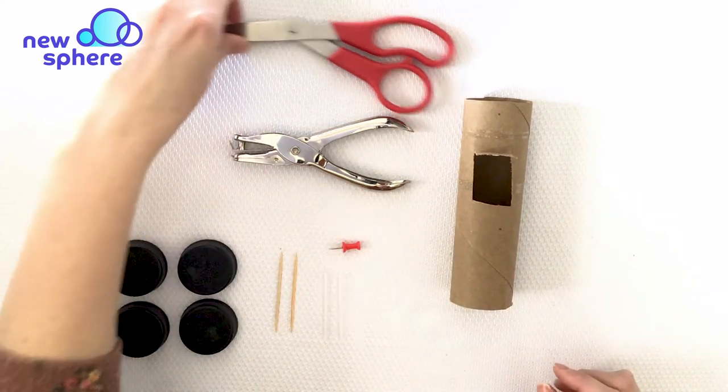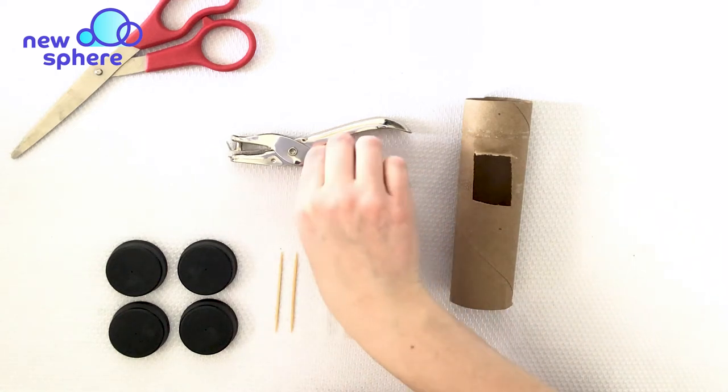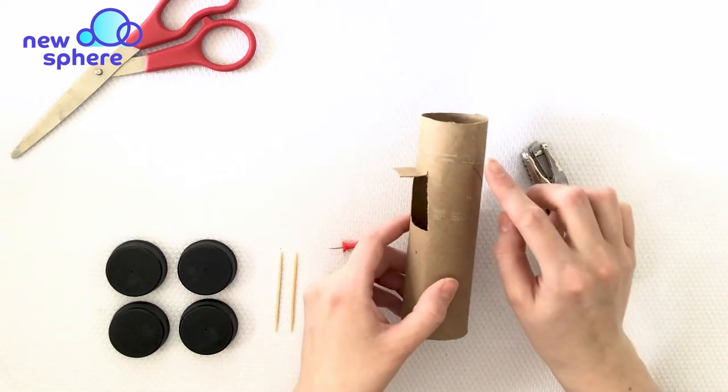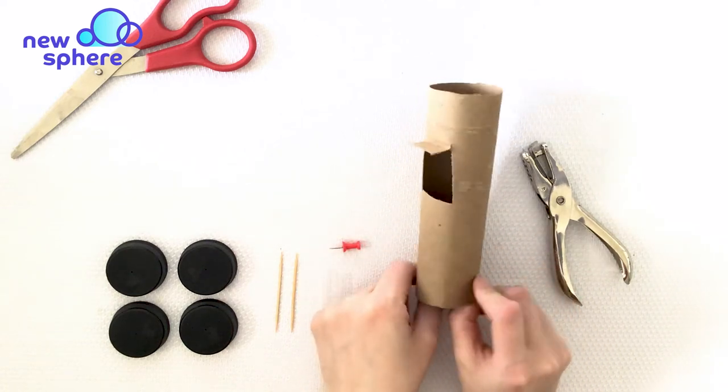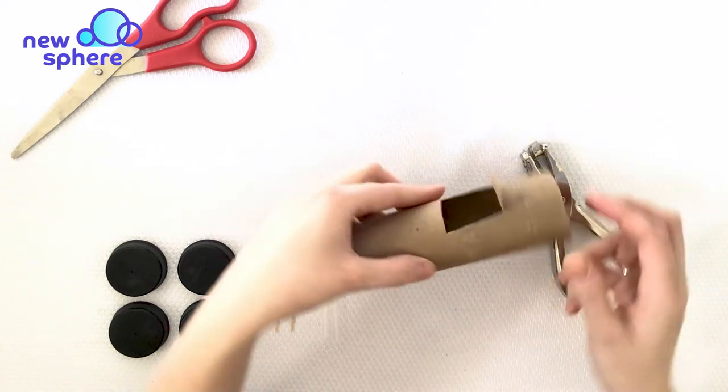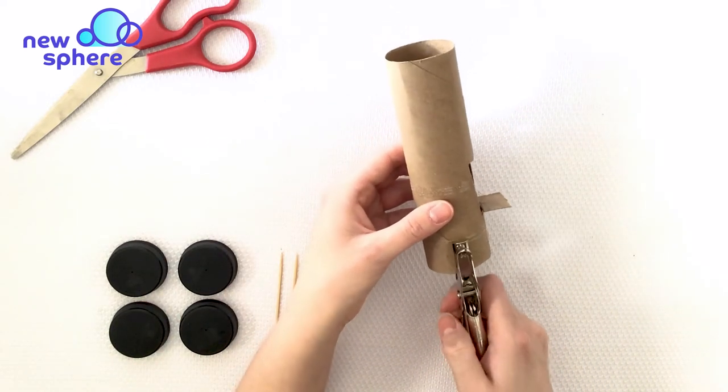Next we are going to put the holes in the bottom of our cardboard tube where the axle is going to go. We need four holes, one on each side of our cardboard tube towards the bottom. You want to try your best to make them even on both sides.